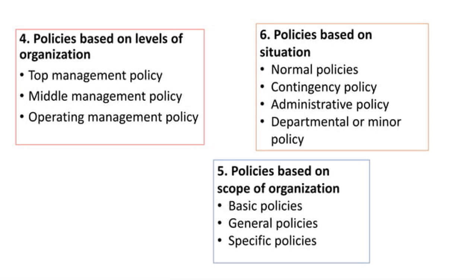Fourth classification is based on level of organization — top level, middle level, and operating or functional level, with policy drafted for each level. Fifth, based on situations — normal policies for normal situations, contingency policies for difficult situations, administrative policies for problem times, and departmental or minor policies. Sixth, based on scope of organization — basic policy, general policy for all employees, and specific policy according to grades, levels, management, and job assigned.